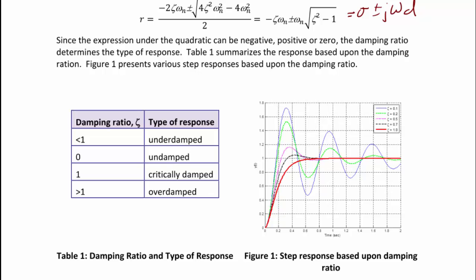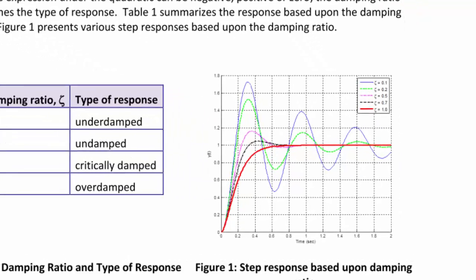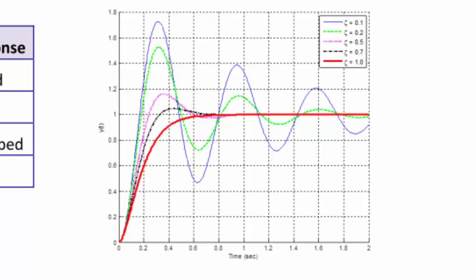In our figure we're showing critically damped and underdamped responses. The red line represents ζ = 1, the critically damped system — it quickly reaches the final value with no overshoot. All other values have ζ < 1, and the smaller ζ gets, the more underdamped the response becomes, meaning more oscillations.